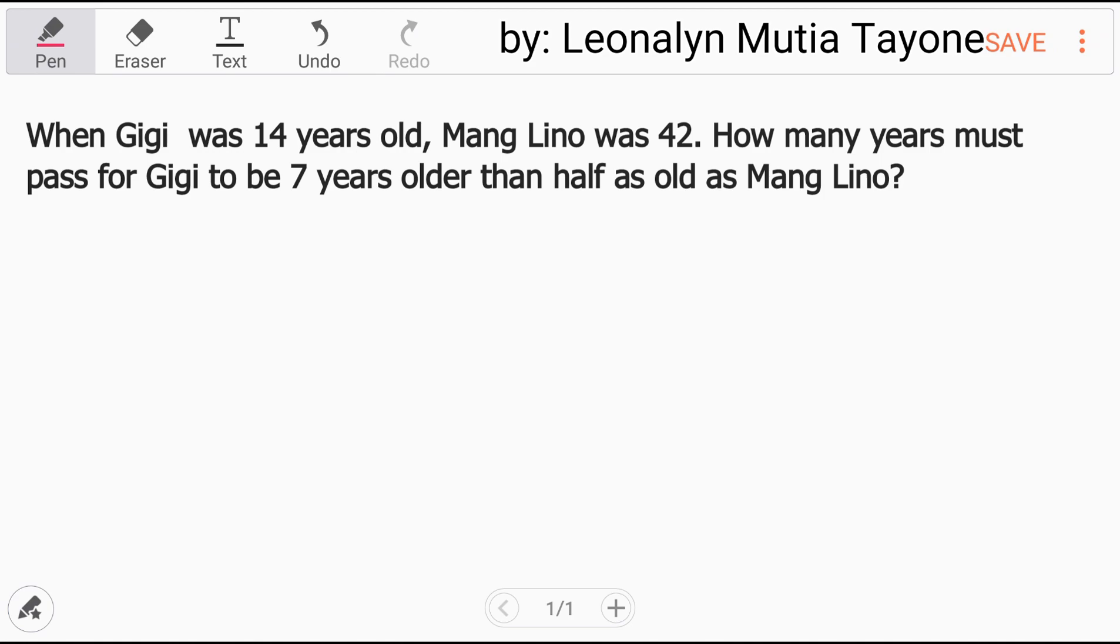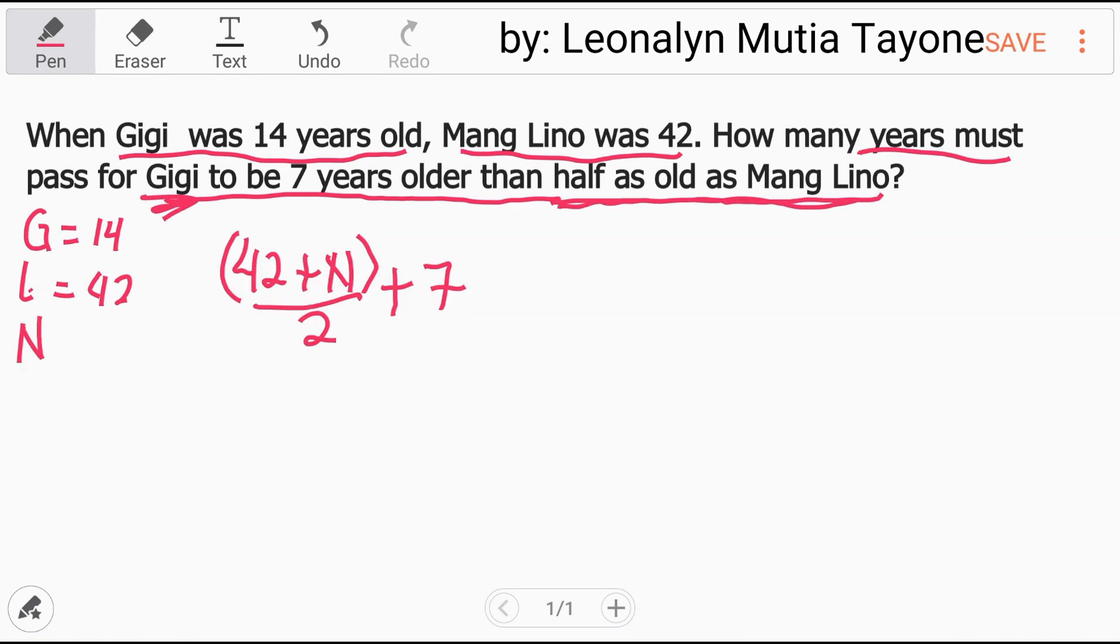Let's read this again. When Gigi was 14 years old, Mang Lino was 42. How many years must pass for Gigi to be seven years older than half as old as Mang Lino? So Gigi's age is 14, Mang Lino is 42. The question is how many years must pass for Gigi to be seven years older than half as old as Mang Lino?